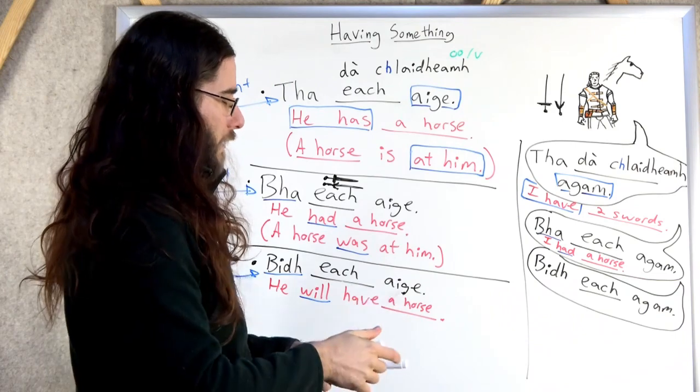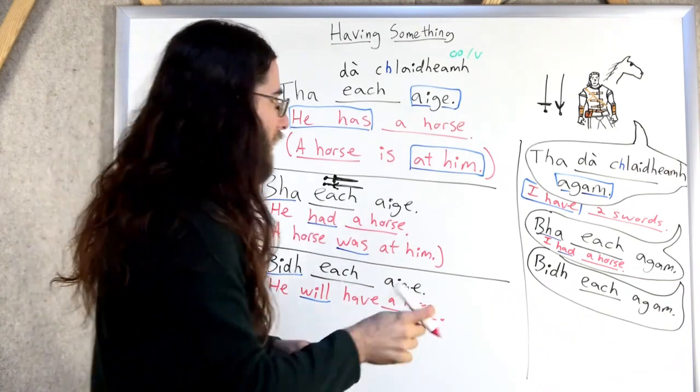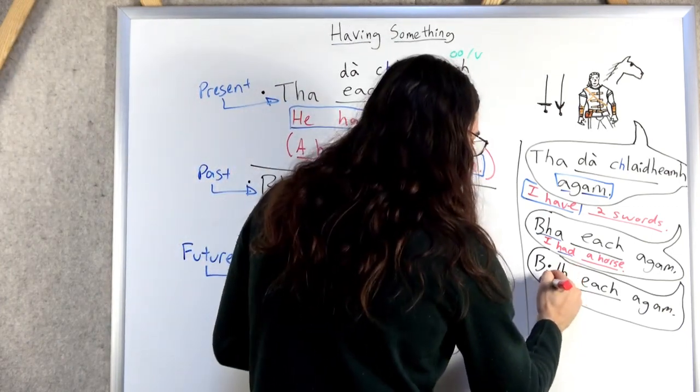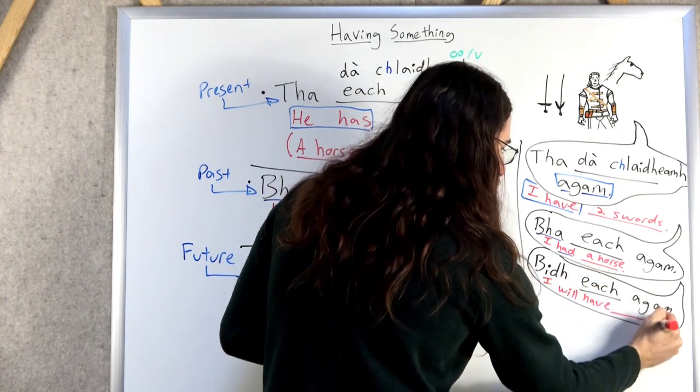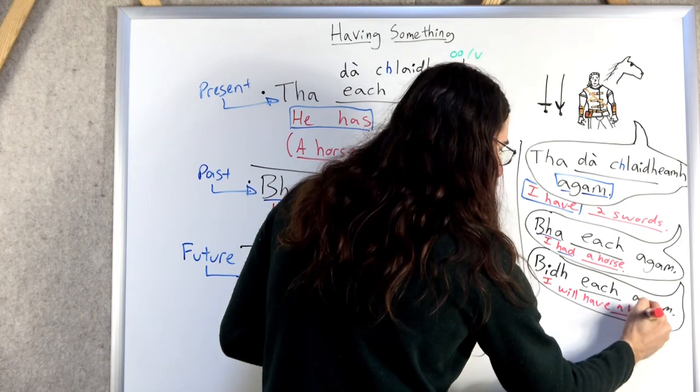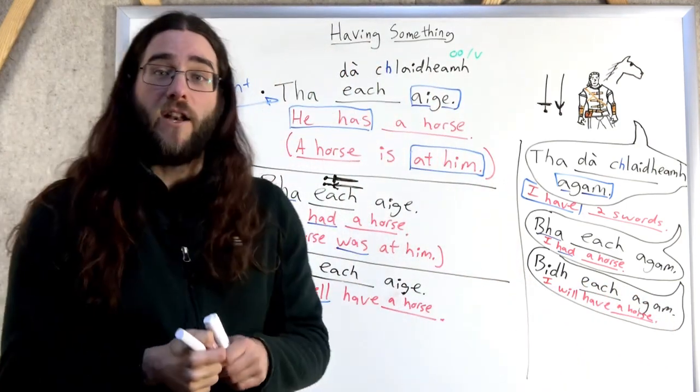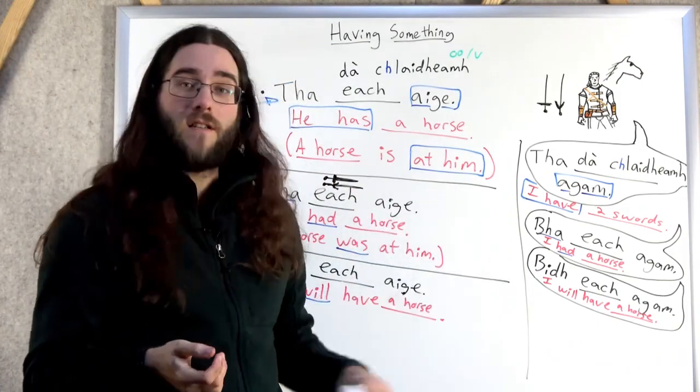How will you get to Oxenfort? Oh, I'll have a horse. Or Novigrad. How the heck are you going to get all the way to Novigrad? Oh, I'll have a horse. I will have a horse. So if you're getting a new pet, new car, new flat, new anything, you would use this construction.